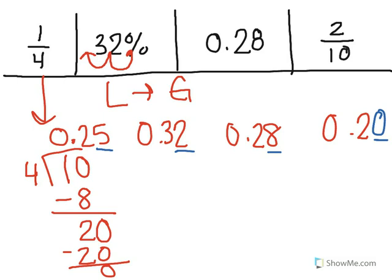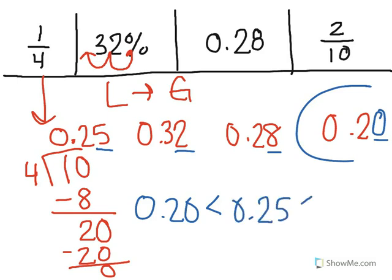Now, if I'm going in order from least to greatest, 0.20 or 20 hundredths is the smallest. Next is 25 hundredths, followed by 28 hundredths, followed by 32 hundredths.